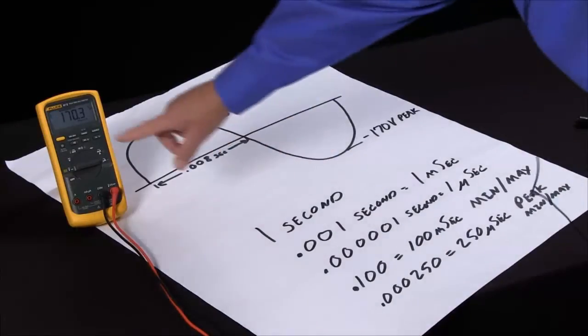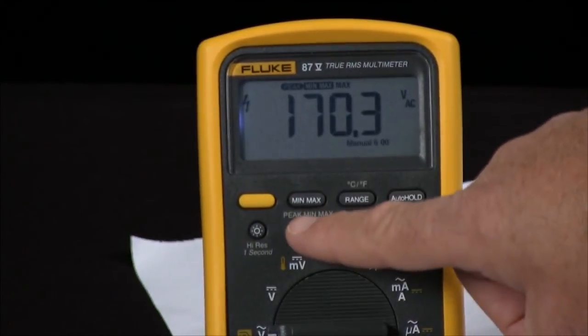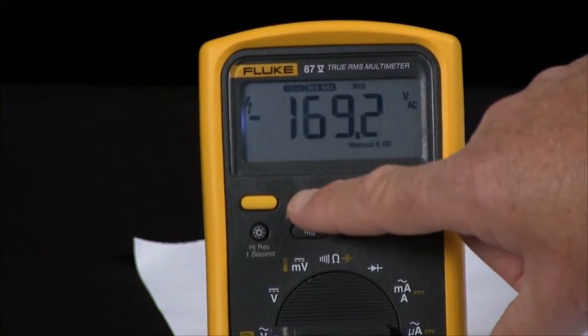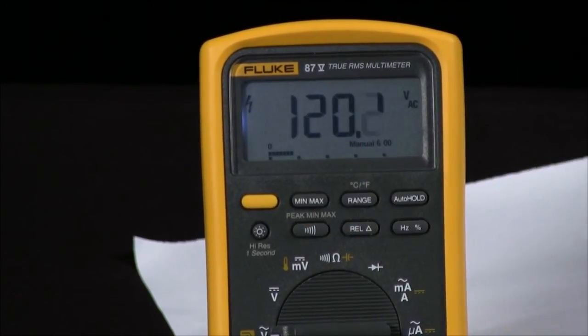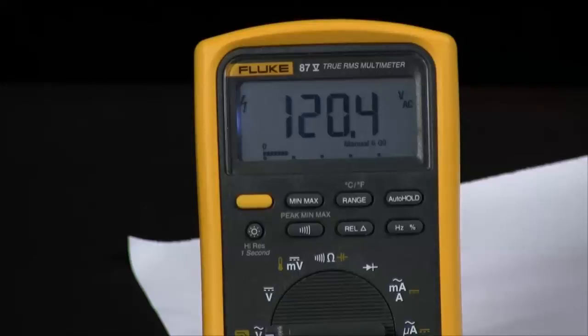So in review, to activate the peak min max, I hit the min max key and then the peak min max key. If I just hold in the min max key, it goes back into normal mode.